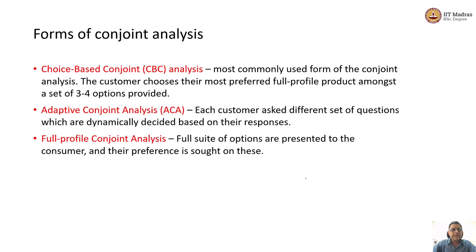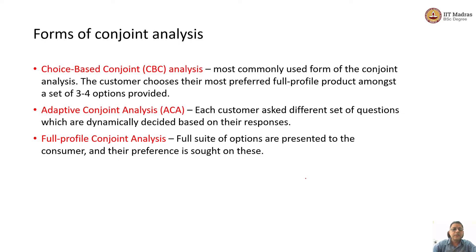The third type is full profile conjoint analysis, where the full suite of options is presented. The consumer compares four variants of the product with data provided for all four options. This differs from choice-based, where I construct smaller sets — a set of three, then two, then three products — asking which is most preferred from each. Full profile conjoint analysis presents all data at once.